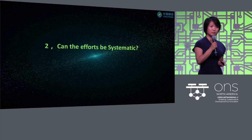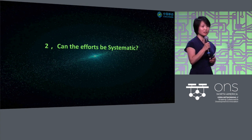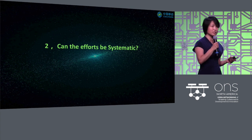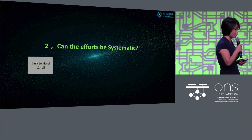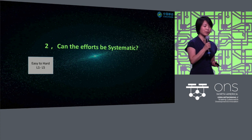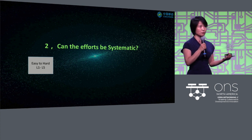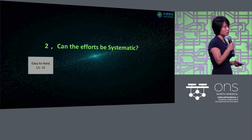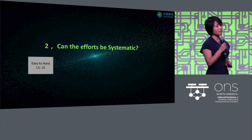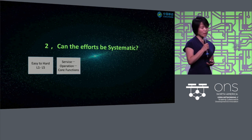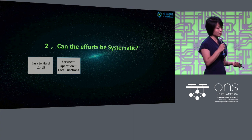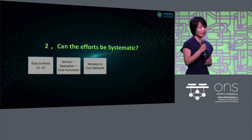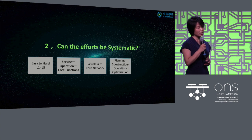The second question: can efforts be more systematic? I've shown what we've done on the transport network, core network, and on the operations and services side. How can we make it more systematic? You can compare it to the levels of autonomous driving — from easy to hard, what is level one and what is level five? We think of it in terms of the service layer, the operation layer, the basic foundation, wireless to core network. In different phases of planning, construction, operation, and optimization, we need AI to come in, but what the framework should look like is still an open question.